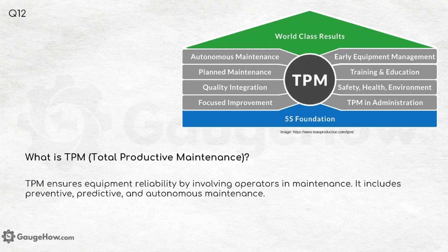What is TPM — Total Productive Maintenance? TPM ensures equipment reliability by involving operators and maintenance staff. It includes preventive, productive and autonomous maintenance, as shown in the figure.